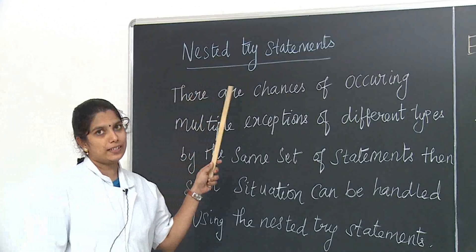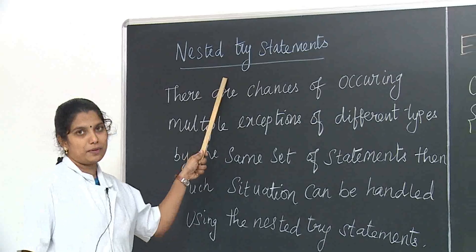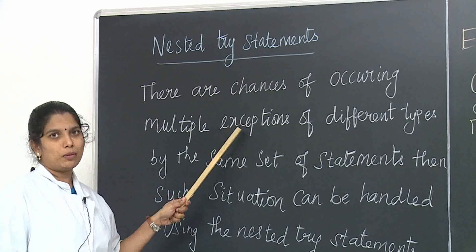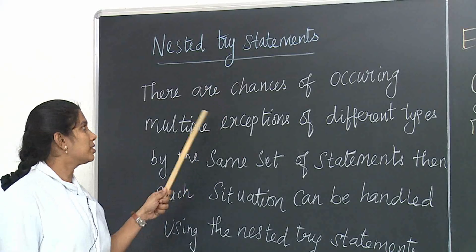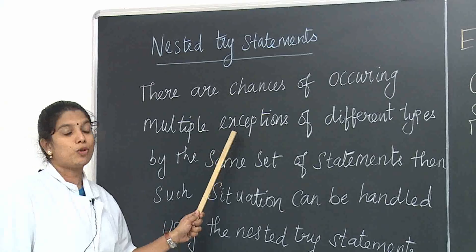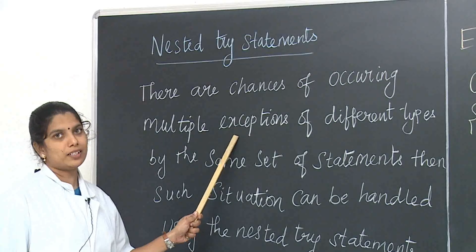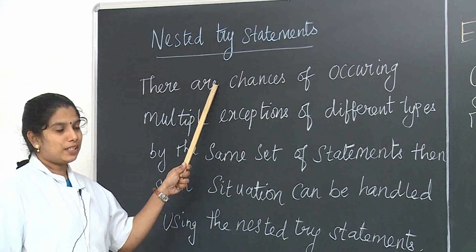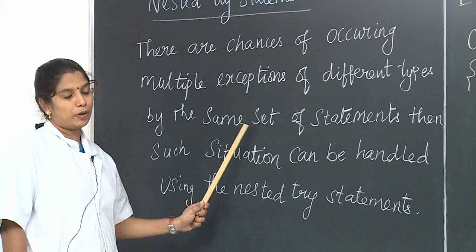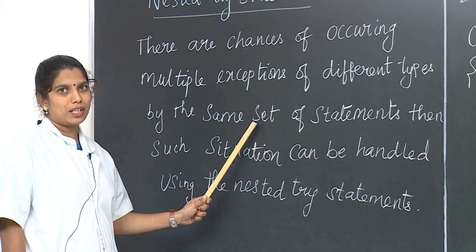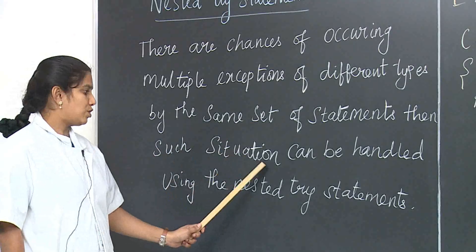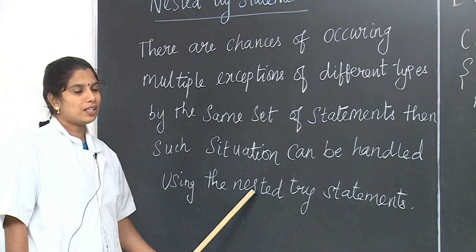The next topic is nested try statements. Inside a try statement, another try statement can be performed, which we call nested try statements. This handles situations where there are chances of multiple exceptions of different types occurring for the same set of statements.